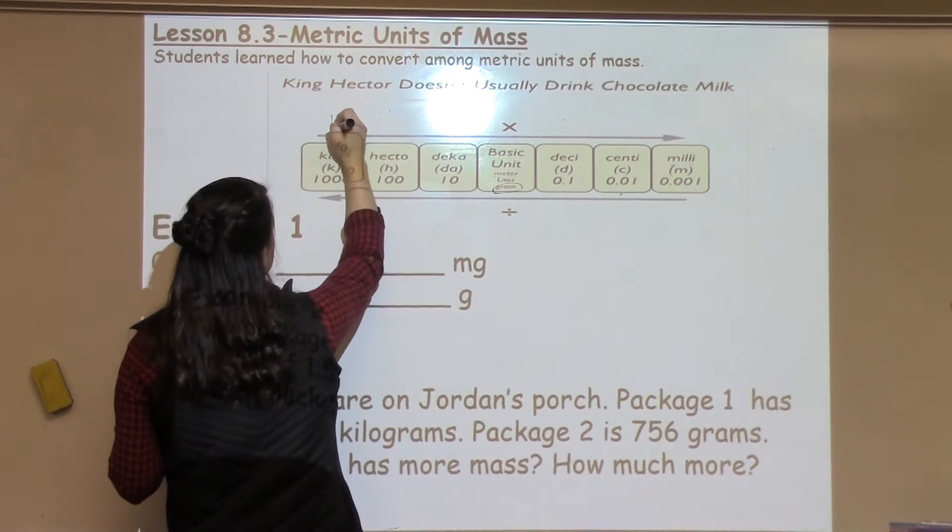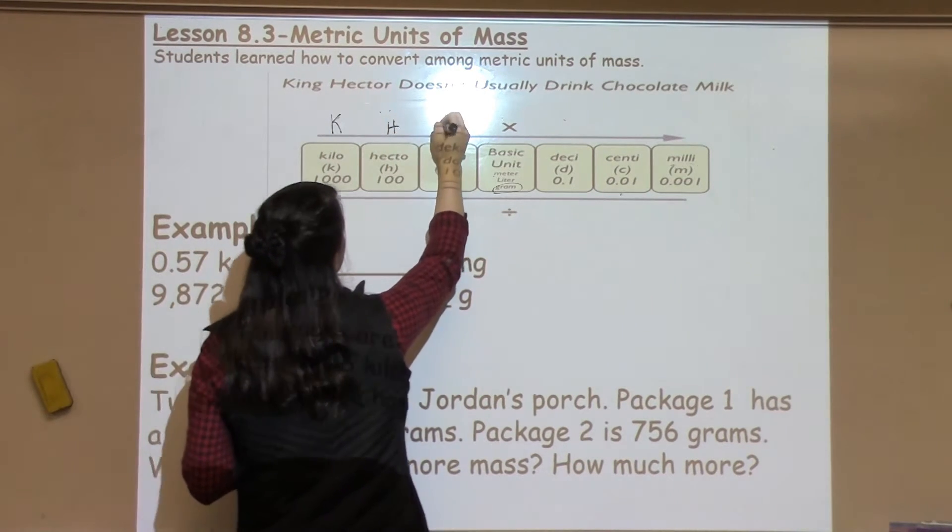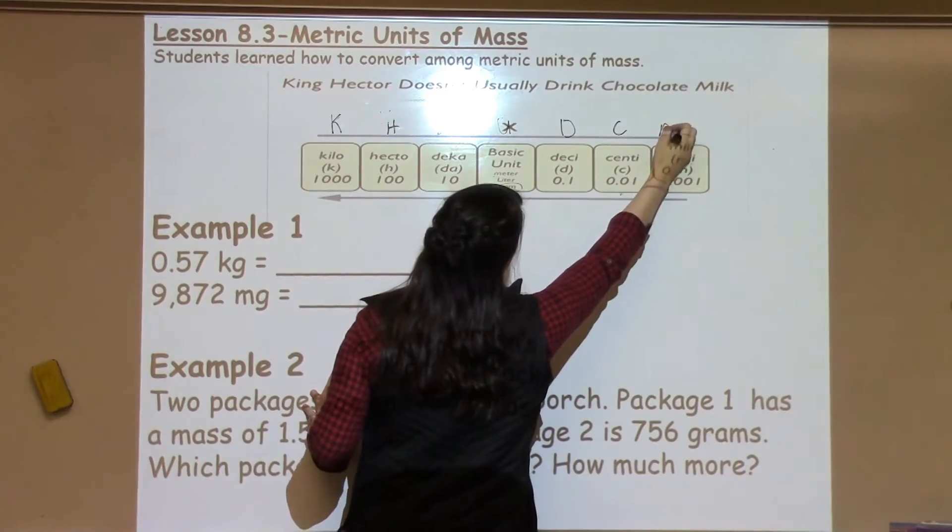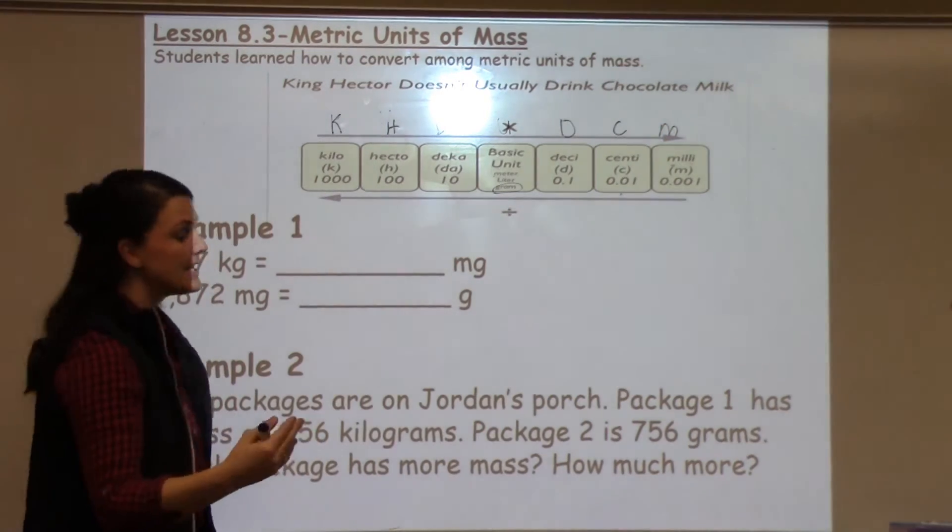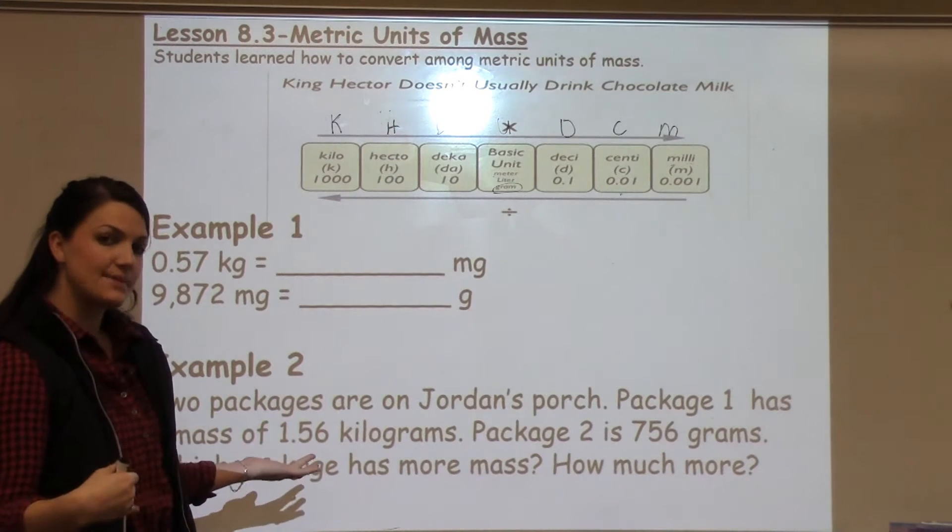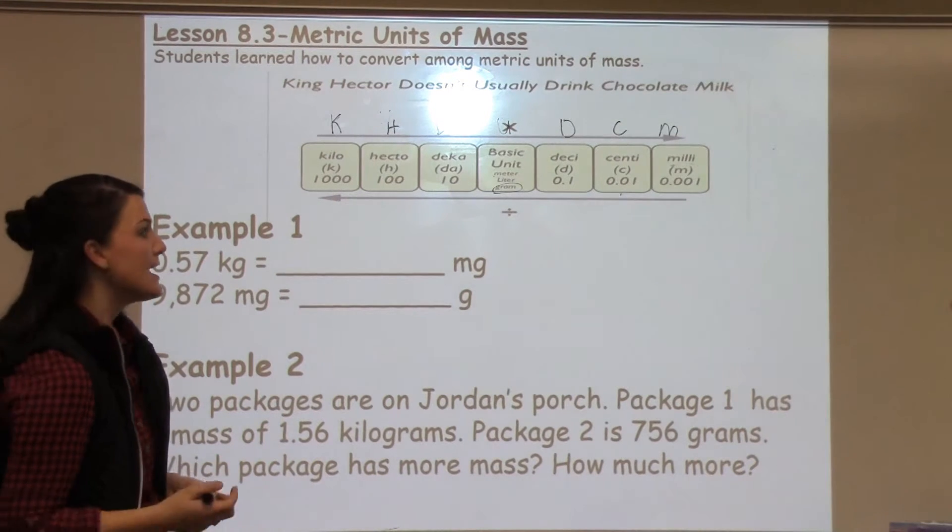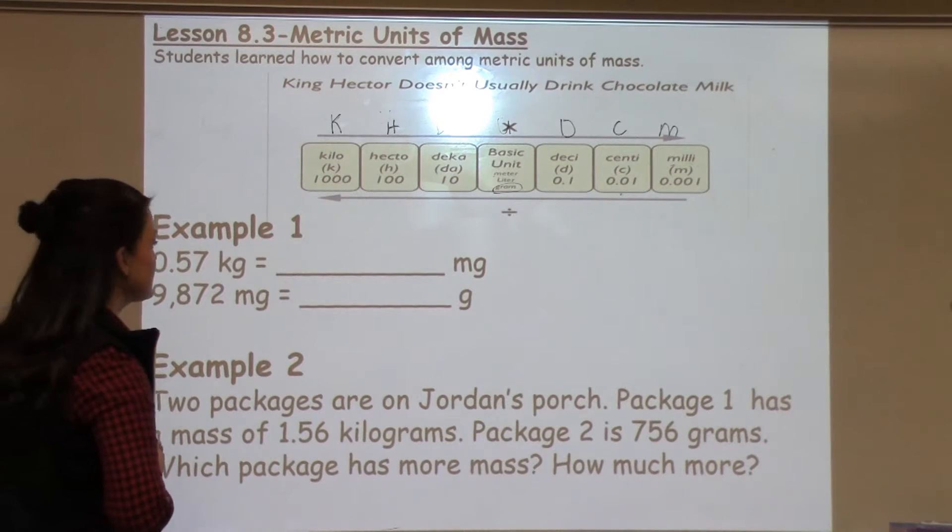In the metric system, all weight is measured in grams and then other units of grams, including kilograms, milligrams, and the other ones in between. So again, we're going to use the saying King Henry doesn't usually drink chocolate milk to help us remember how to move, which directions, and also whether we're multiplying, dividing, getting smaller and larger as we move from one unit of measure to the next.